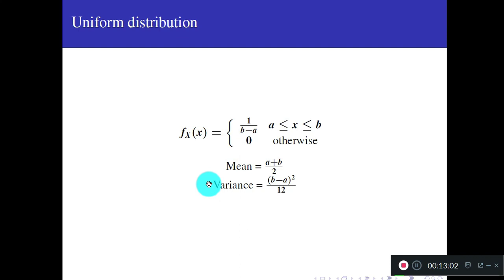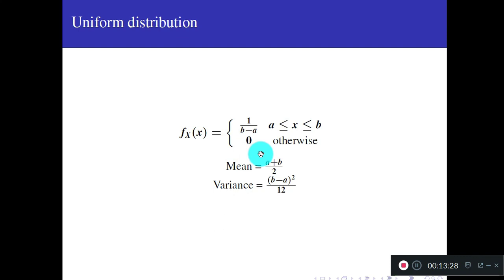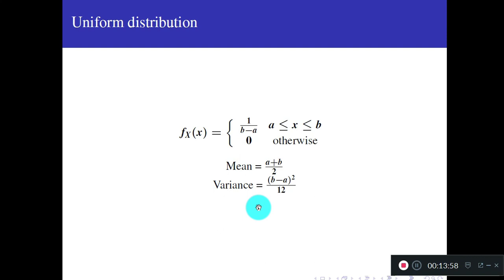We studied several standard distributions. For application problems, remember the mean, variance, and PDF of each. Uniform distribution: PDF is f_X(x) = 1/(b − a) for a ≤ x ≤ b, and 0 elsewhere. Since it is a continuous random variable, the mean is obtained by integrating, giving (a + b)/2.